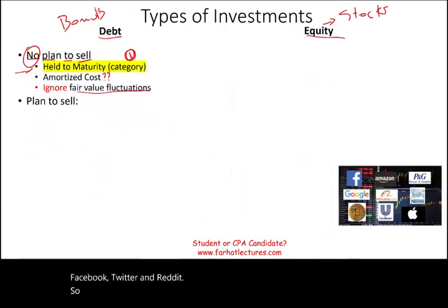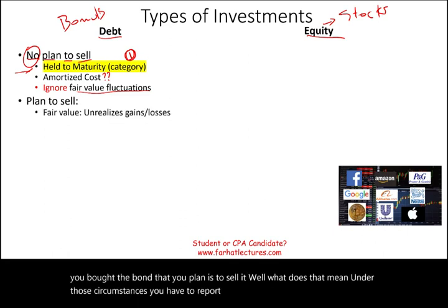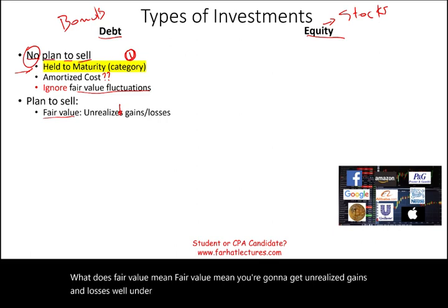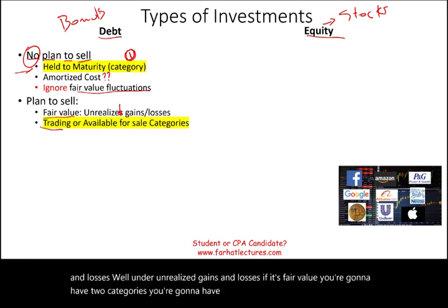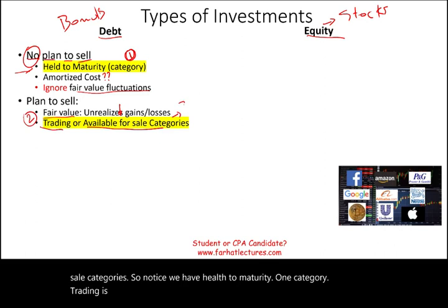What happens if your plan is to sell the bond? You made an investment, you bought the bond, but your plan is to sell it. Under those circumstances, you have to report the investment in the bond at fair value. Fair value means you're going to get unrealized gains and losses. Under fair value, you're going to have two categories: trading or available for sale.